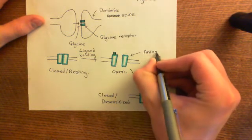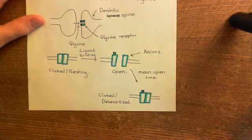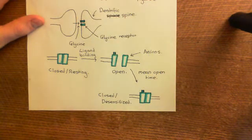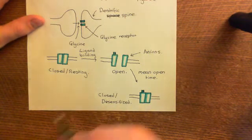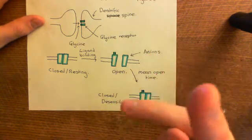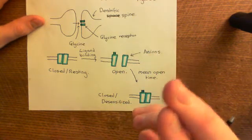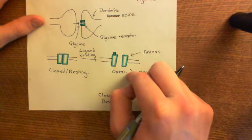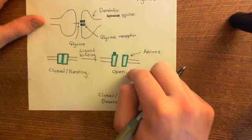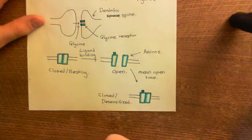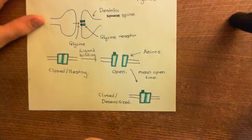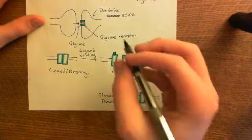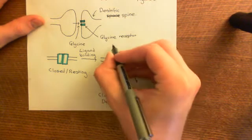Basically, it's permeable to chloride anions. The glycine receptor is an anionic channel — it's permeable to anions. The question is, what direction is chloride going to move through this open channel? For this, we need to consider two things: what are the concentrations of chloride anions on either side of this membrane, and what is the electrical potential difference across the membrane.